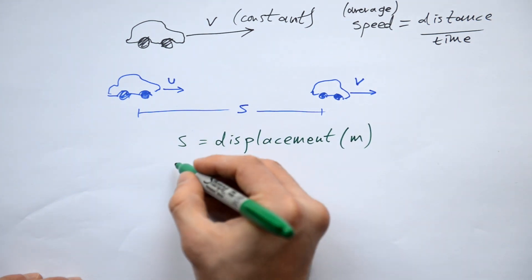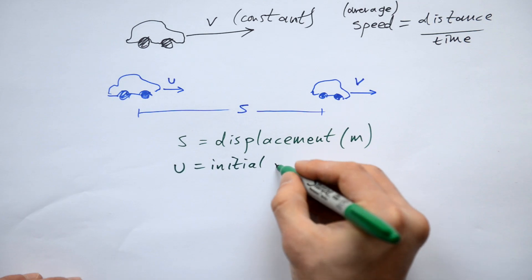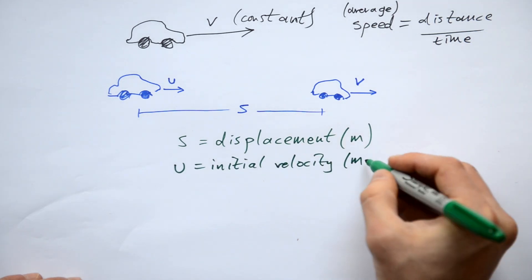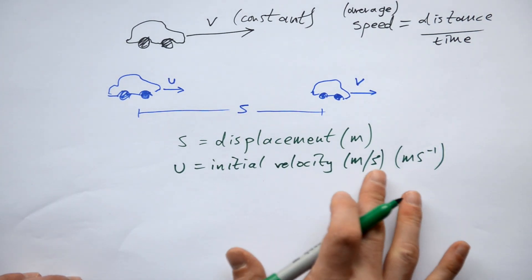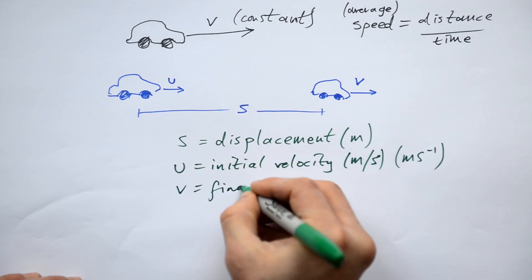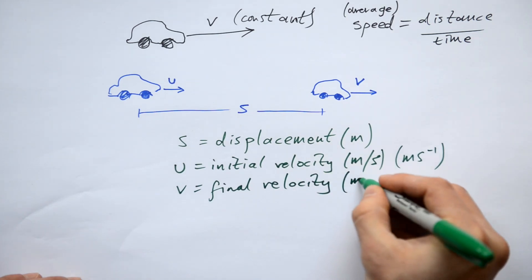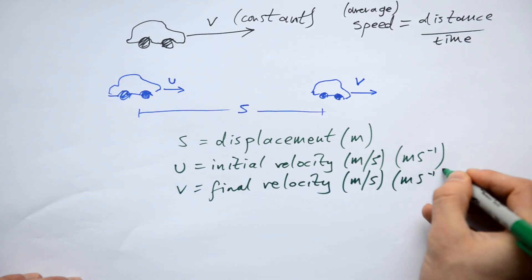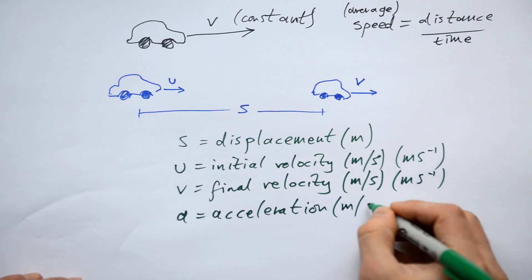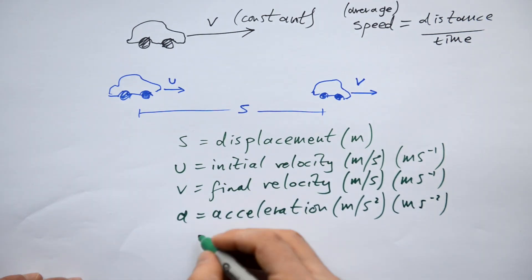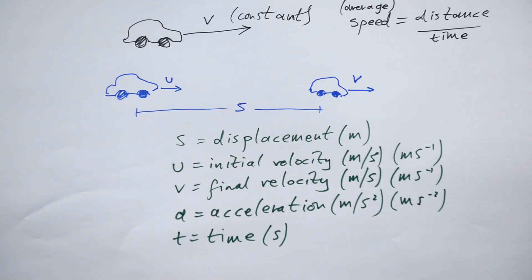S is displacement, measured in meters. U is initial velocity, measured in meters per second. Now we can write it either as M slash S, or if you're in A level, chances are that you're writing it like that. If anything's to the minus power, then that means we're dividing by it exactly the same unit. V is final velocity, so obviously M slash S, or M S to the minus 1. A is acceleration. Finally T is time. So you will have to remember all of these five things and what they actually mean. You have to relate the letter to what it means.